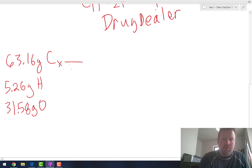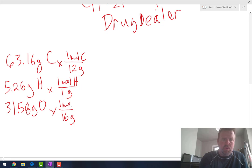And then we do the same thing. There's 12 grams in one mole of carbon. There's one gram in one mole of hydrogen. And there are 16 grams in one mole of oxygen. And now I go to my calculator.